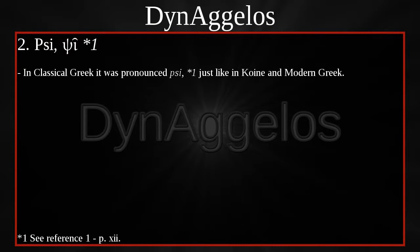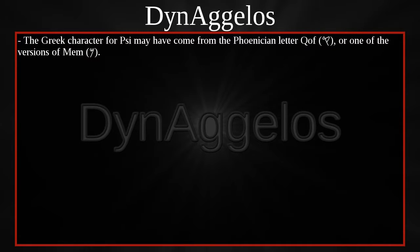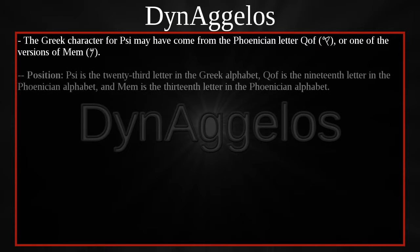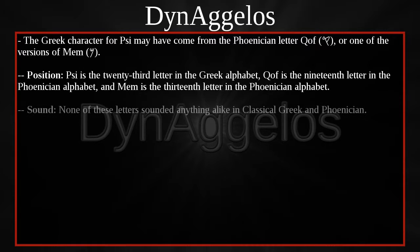Alright, we're back. PSI — in classical Greek it was pronounced PSI, just like in Koine and modern Greek. The Greek character for PSI may have come from the Phoenician letter KOF, or one of the versions of MAME. PSI is the 23rd letter in the Greek alphabet. KOF is the 19th letter in the Phoenician alphabet, and MAME is the 13th letter in the Phoenician alphabet. None of these letters sounded anything alike in classical Greek and Phoenician.